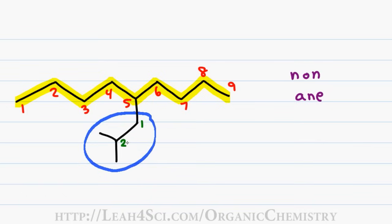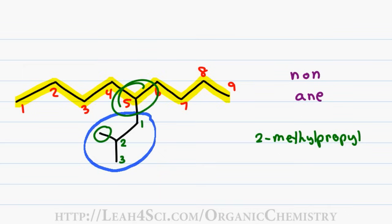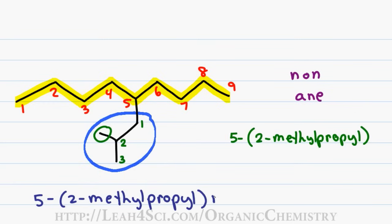I have 2 methyl groups coming off the second carbon, so it doesn't matter which I number as 3. I have a total of 3 carbons in the longest substituent chain, giving me a propyl group — 'prop' telling me 3 and 'yl' telling me it's a substituent — with a methyl group coming off the second carbon, giving me a 2-methylpropyl. Since this entire substituent comes off of carbon 5 on the parent chain, I put a 5 in front and put the entire substituent in parentheses, giving a final name of 5-(2-methylpropyl)nonane.